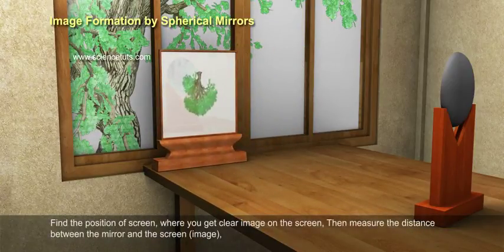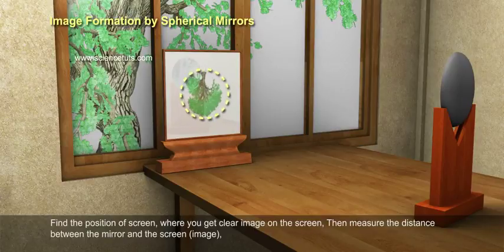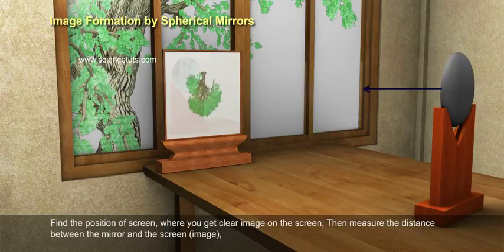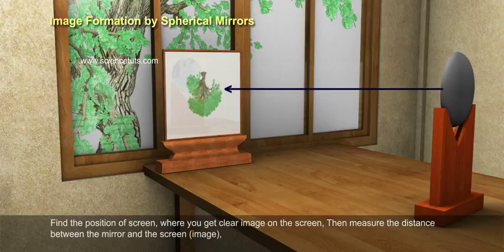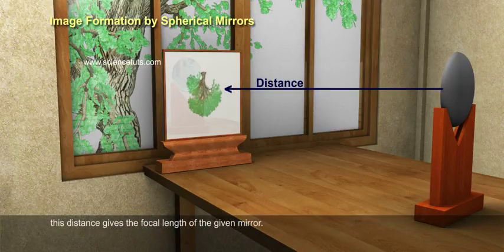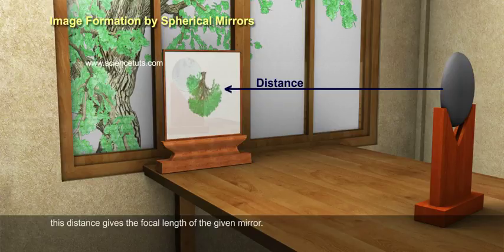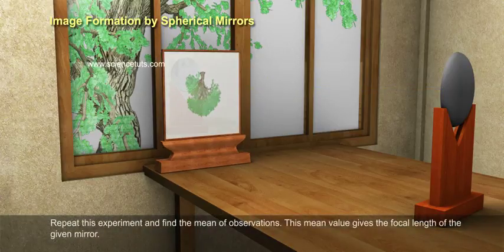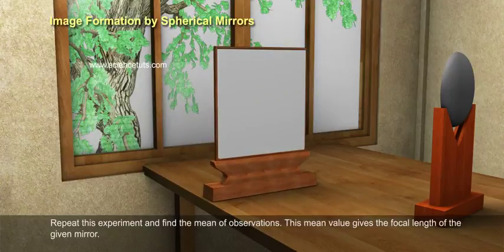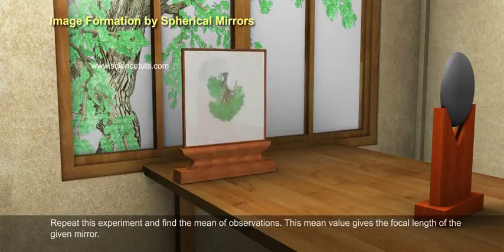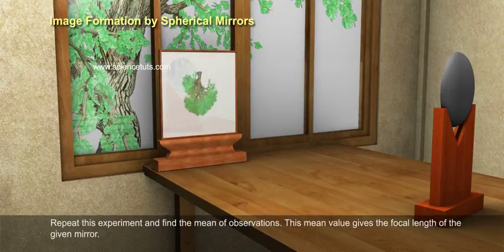Now adjust the screen to find the well-defined image of the tree. Find the position of screen where you get clear image on the screen. Then measure the distance between the mirror and the screen image. This distance gives the focal length of the given mirror. Repeat this experiment and find the mean of observations. This mean value gives the focal length of the given mirror.